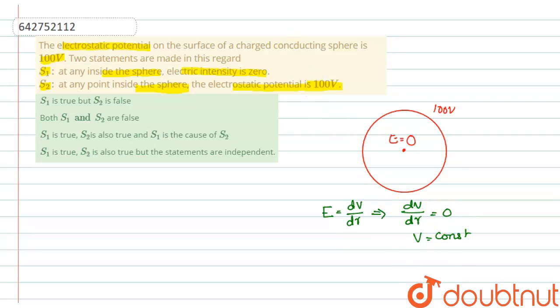The conductor sphere is having potential 100V. Hence, V equals 100V inside the sphere. Inside the sphere, the electric intensity is equal to 0 and V equals 100V.